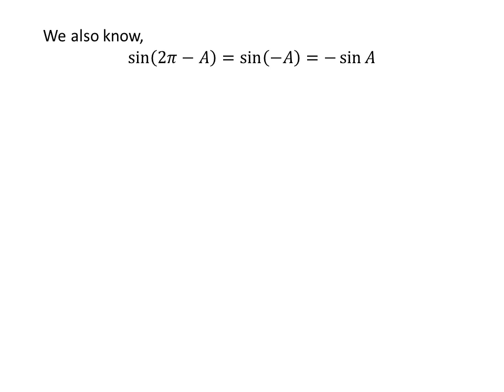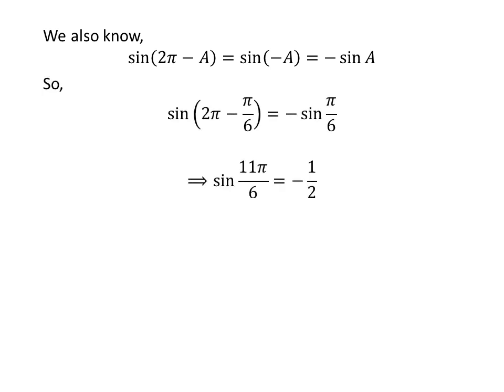We know the value of sin of x repeats after an interval of 2 times pi, so sin of 2 times pi minus a is equal to sin of minus a. We also know the identity sin of minus a is equal to minus sin of a. Applying these identities gives us sin of 11 times pi upon 6 is equal to minus half.